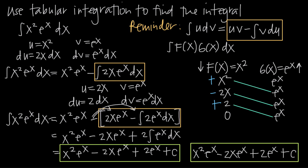Tabular integration works in place of integration by parts whenever you have one function inside your integral whose derivatives eventually go to 0. If that's the case, you can use tabular integration to find the correct answer, and especially for problems where you'd need to apply integration by parts multiple times, tabular integration can be a lot faster.